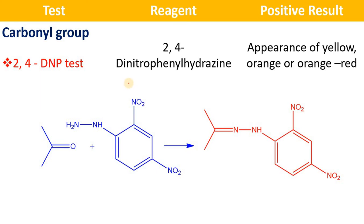Welcome to Bond with RK Chemistry YouTube channel. In this video I will explain the identification tests of carbonyl compounds, that is aldehydes and ketones. Generally carbonyl compounds can be distinguished by using 2,4-dinitrophenylhydrazine test, sodium bisulfite test, Schiff's test, Tollen's test, Fehling's test, and Benedict's test.